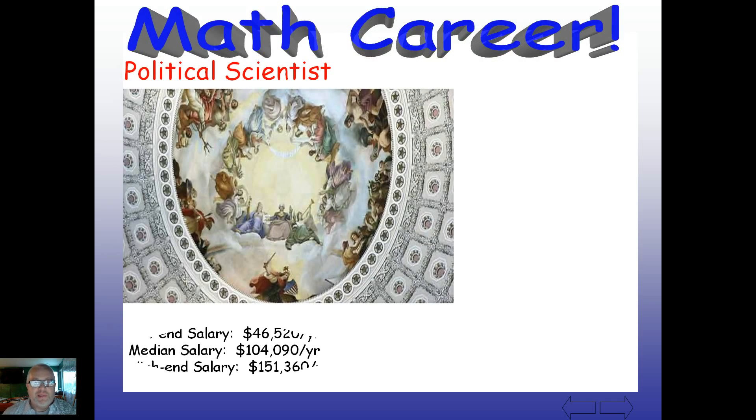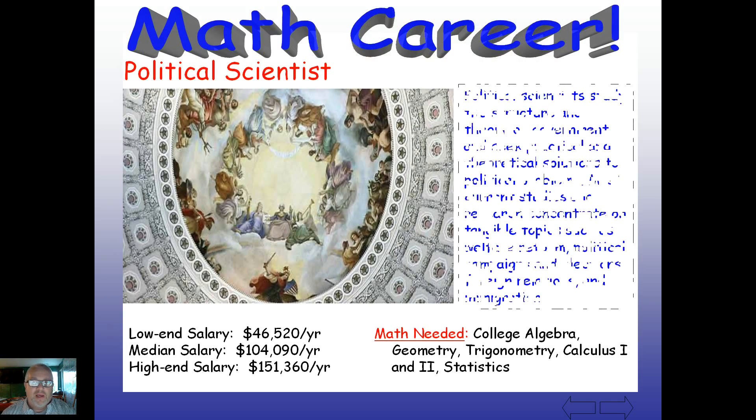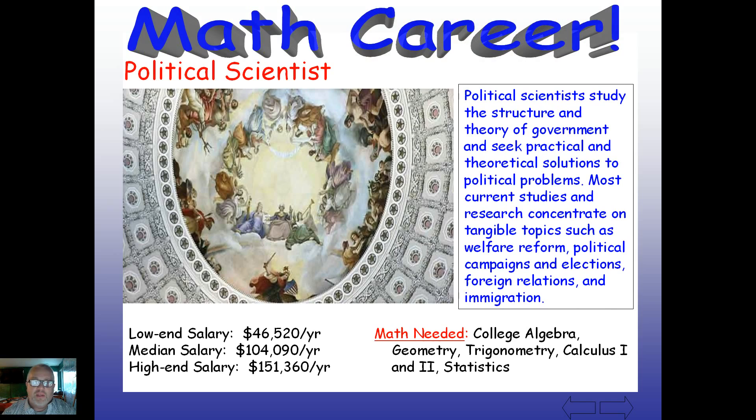Here's our math career for today. A political scientist, they study the structure and theory of government and seek political and theoretical solutions to, of course, political problems. You can see your math down here that you're going to need. It still requires a lot of discipline, a lot of critical thinking skills, and a lot of times along the way you might have to be doing some economics and math work in order to figure out problems for other countries or governmental situations, agencies, and so on. Political scientist, also, if you like to live on the East Coast, maybe you live in Washington, D.C. Who knows?